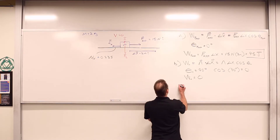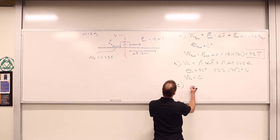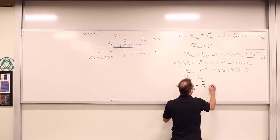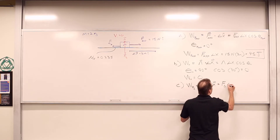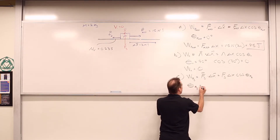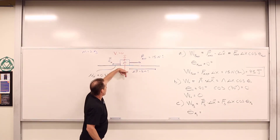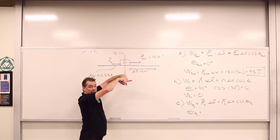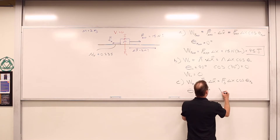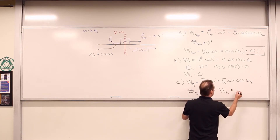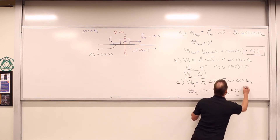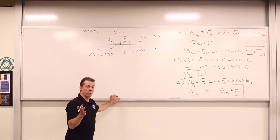We can also look at the gravitational force, which gives the same result. The work done by F_g equals F_g · Δx · cos(θ_Fg). The force of gravity is also perpendicular to the displacement, so θ = 90 degrees, cos(90°) = 0, and the work done by the force due to gravity is also zero. So the normal force and gravity do no work — only our applied force does work so far.